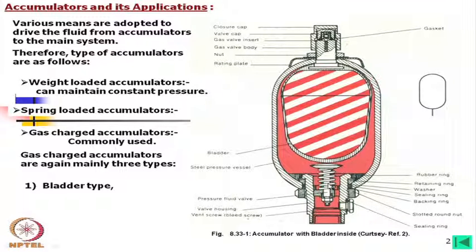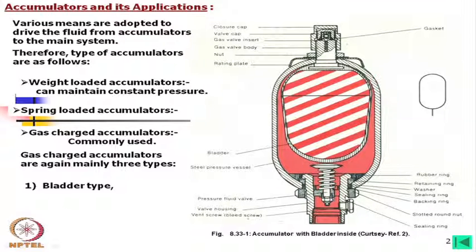On the bottom side we find a pressure fluid valve — another valve through which oil is allowed to the main system — and a bleed screw for when bleeding is necessary, then a slotted round nut to fix this. There are many other small components to make this fitting leak-proof from the accumulator. The symbol of this accumulator, whether bladder or other type, is usually given by a single symbol.